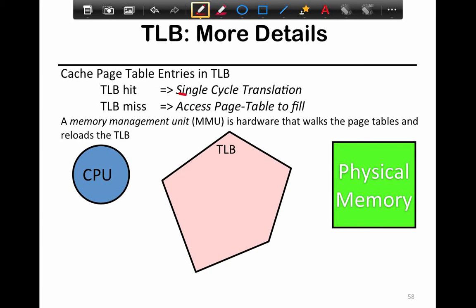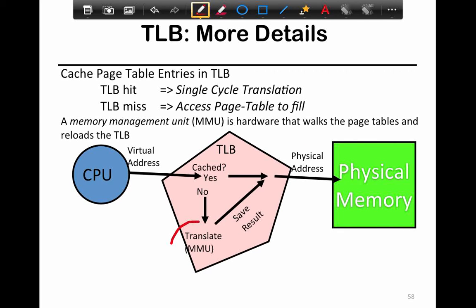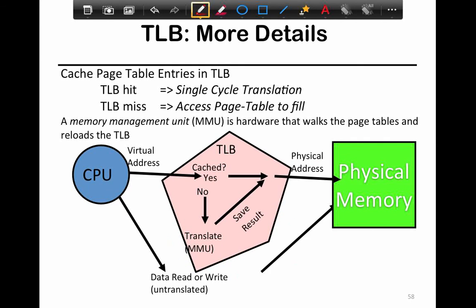A TLB hit typically leads to single-cycle translation. TLB misses lead to page table refills. TLBs are also known as MMUs — the MMU component essentially corresponds to the hardware that walks the page tables and reloads the TLB on a miss. So: first you have the virtual address and you check if the TLB has it cached. If yes, you get the physical address and move on. If no, you reload from the page table, save the result in the TLB, and then retranslate.